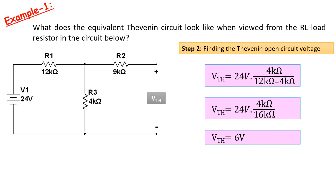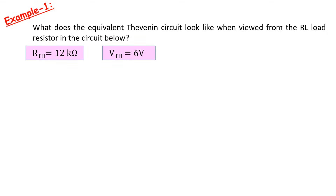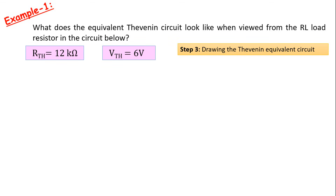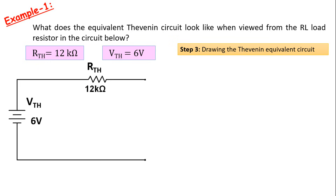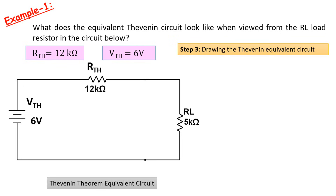The third and last step is to draw the equivalent circuit of Thevenin. The Thevenin voltage is shown as an independent voltage source, and the equivalent resistance of Thevenin must be connected in series with it. We can also connect the load resistor RL to this circuit. This is the Thevenin equivalent circuit for this example. If we do a source conversion and show this circuit as a current source, we get the Norton equivalent circuit.